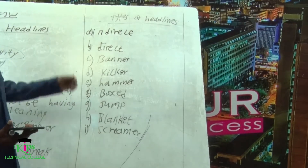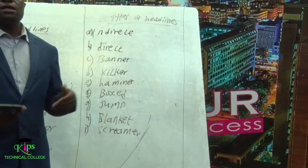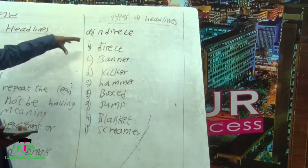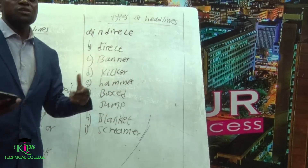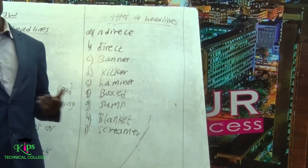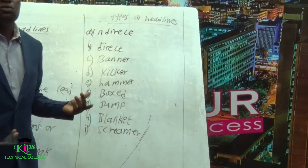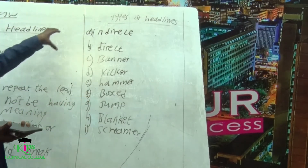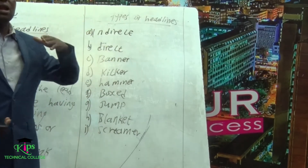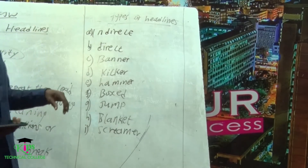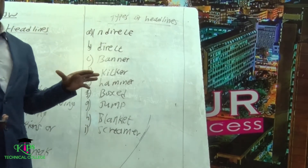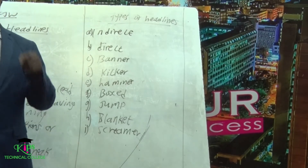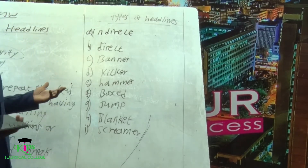We are going to begin from the first type of headline — what you call the indirect headline. The main purpose of the indirect headline is used mostly in an anecdotal format of writing a story, whereby you are not going to come up with a direct link between your headline and the story. You can come up with a headline that is narrative in form, whereby the reader has to go through the story to be able to contextualize the actual meaning of what you are talking about.